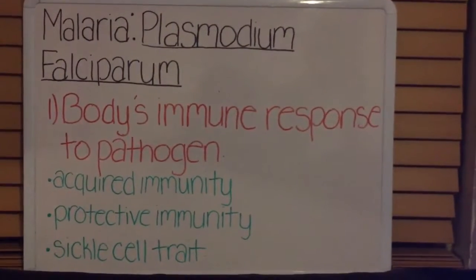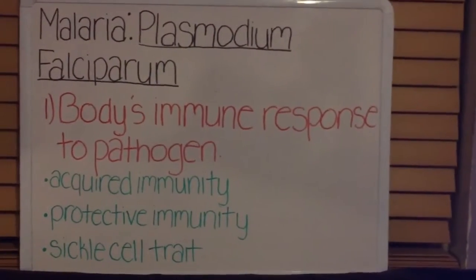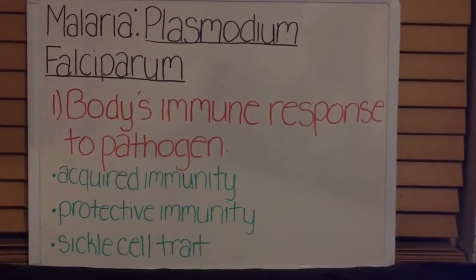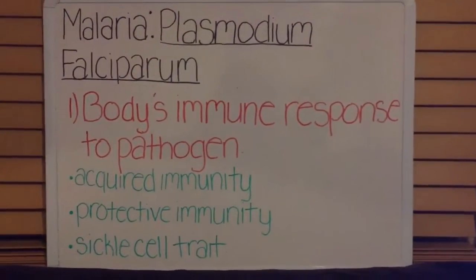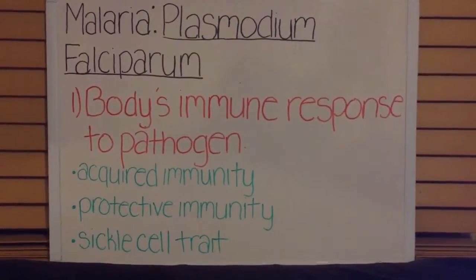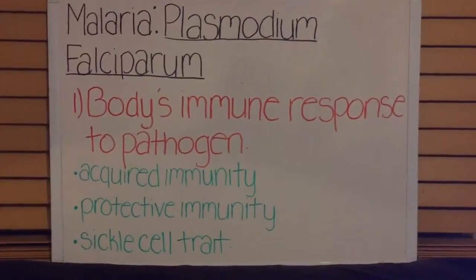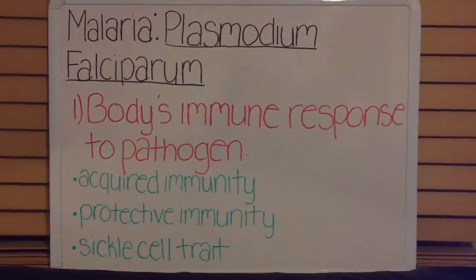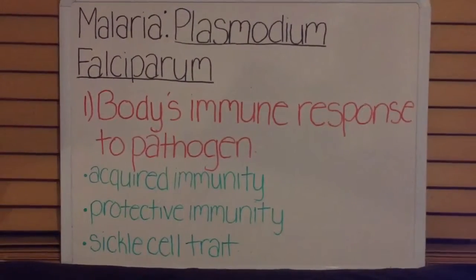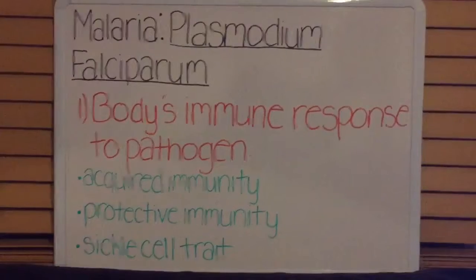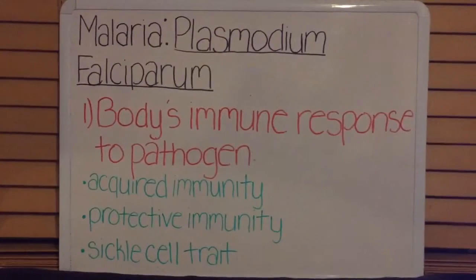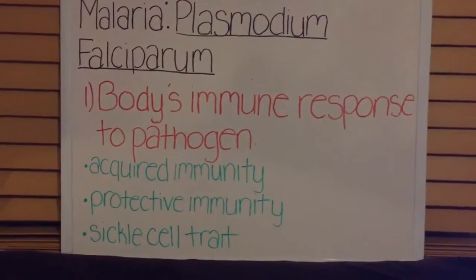In Sub-Saharan Africa, where P. falciparum is prevalent, when a child is conceived, it automatically inherits acquired immunity from the mother. Newborns are protected from the parasite within the first few months because of the antibodies given by the mother through the placenta. The antibodies decrease over time, leaving the child's own immune system to fight off the infection, which isn't strong enough to withstand the parasite. Therefore, the child becomes more and more vulnerable to infection. If the child survived multiple infections to an older age, around two to five years old, the body develops protective immunity.